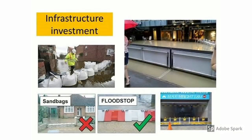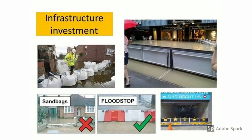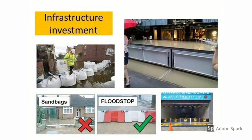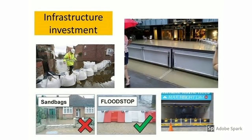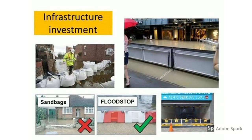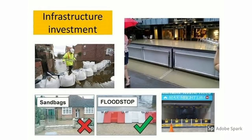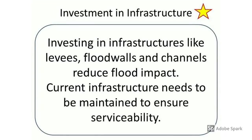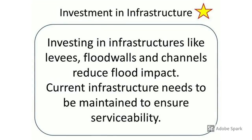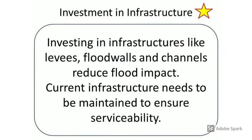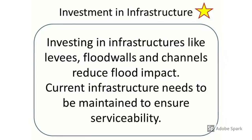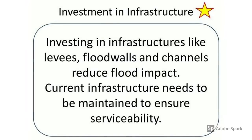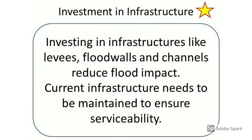Next is infrastructure investment. This ranges from simple, inexpensive measures like sandbags and flood stops, to advanced structures like flood barriers — such as the one at Liat Towers, which has visibly failed as floodwater still entered. Levees, flood walls, and channel improvements reduce flood impact. However, existing infrastructure must be maintained — if built 10 to 15 years ago and not maintained, it will fail when floods occur.